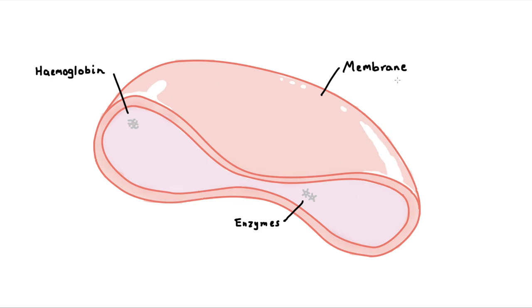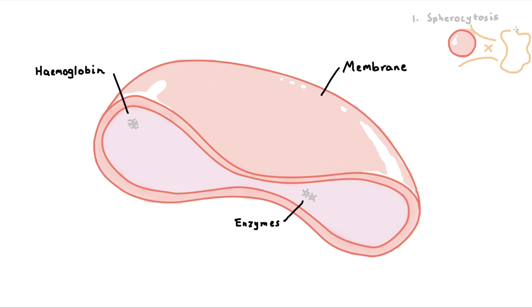If we have an inherited deficiency in certain RBC membrane proteins, our RBCs won't resemble the classic biconcave disc. In hereditary spherocytosis, a complete lack of several proteins causes the RBCs to be produced as spherocytes, which are sphere-shaped. They can't fit through the bottlenecks of the spleen and are thus determined to be abnormal. They are then phagocytosed by spleen macrophages.